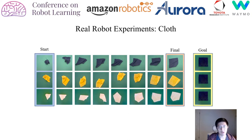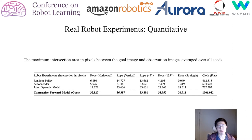Here we show some extra real robot cloth trajectories. Note that we use the same blue cloth goal state for all tasks, showing that our latent space is more or less agnostic to the color of the cloth. Finally, we present more real robot quantitative evaluations showing that our method works significantly better than the existing baselines.